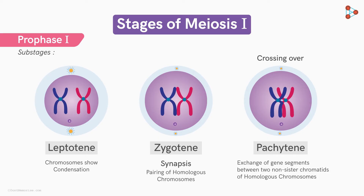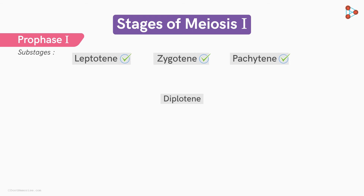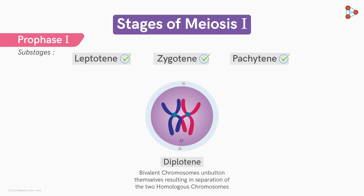The location where the exchange takes place is called chiasma. After successfully interchanging genes, the cell enters the next substage called diplotene. In diplotene, the bivalents separate, resulting in the separation of the two homologous chromosomes — but the homologous chromosomes are still anchored at the chiasma.